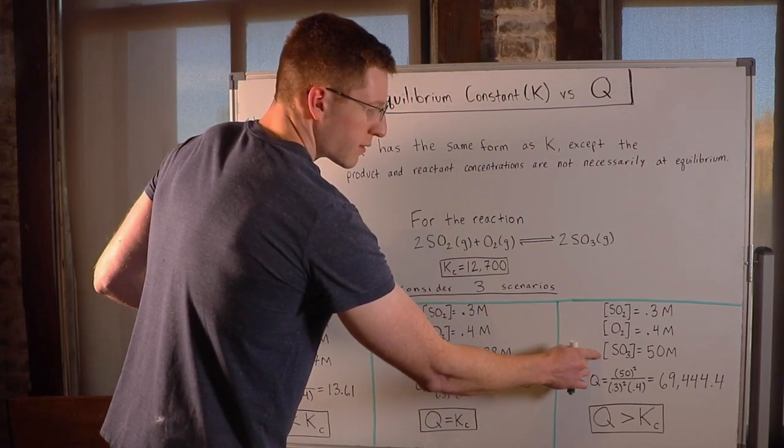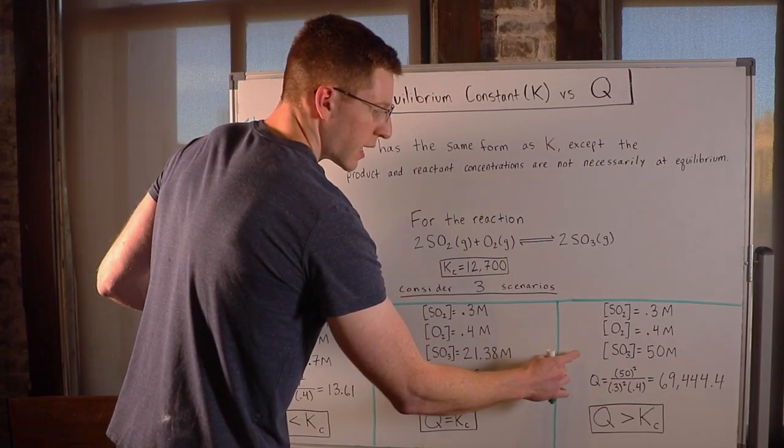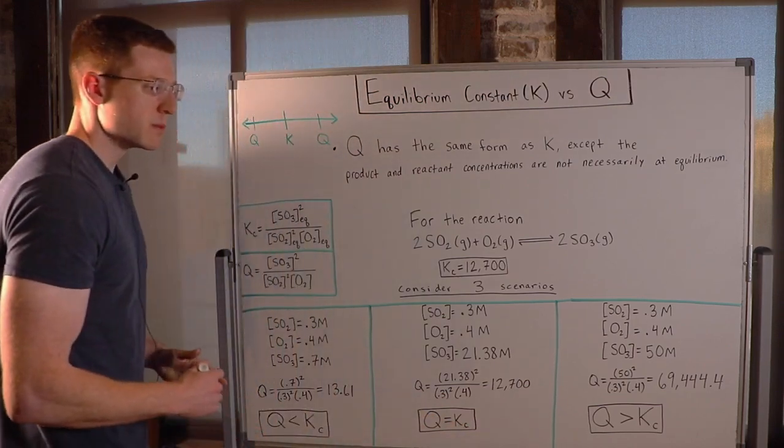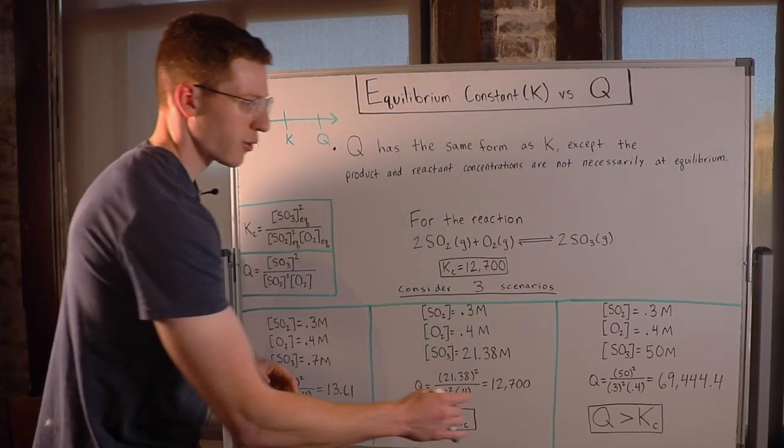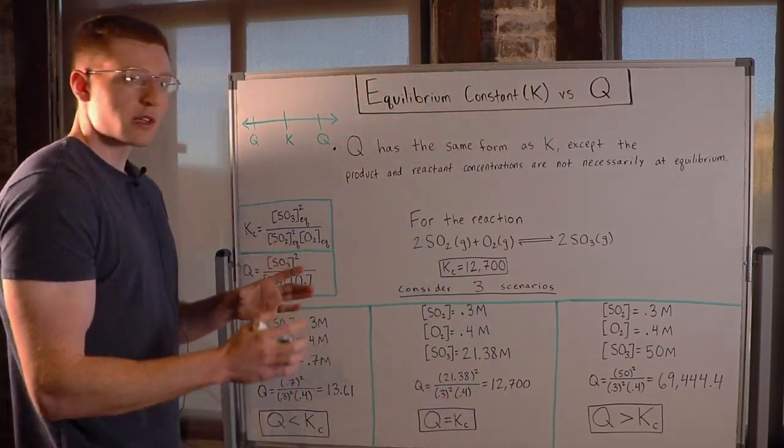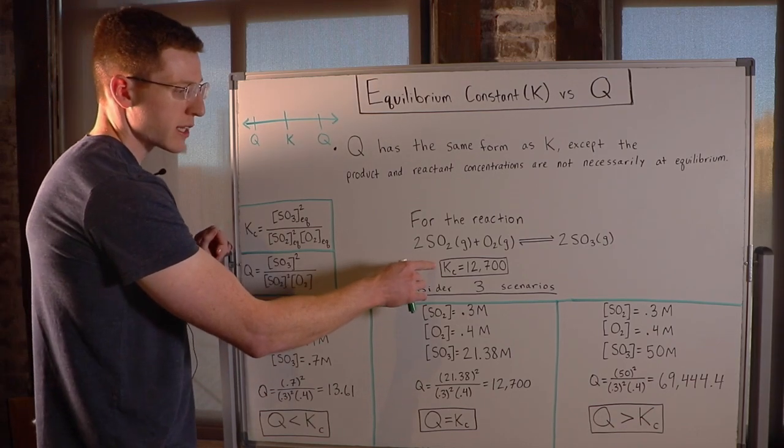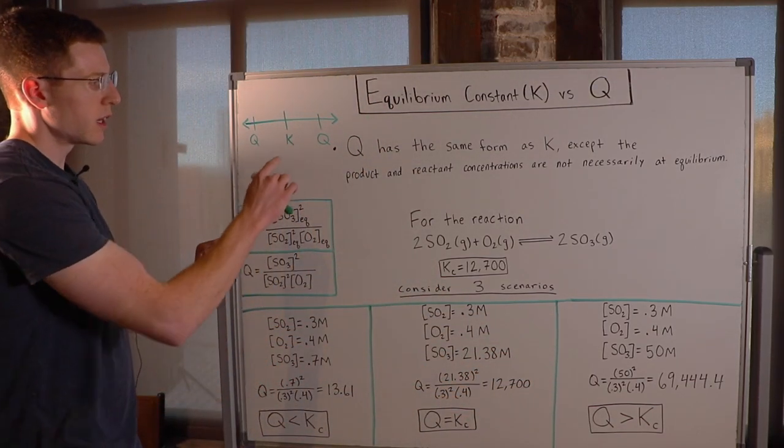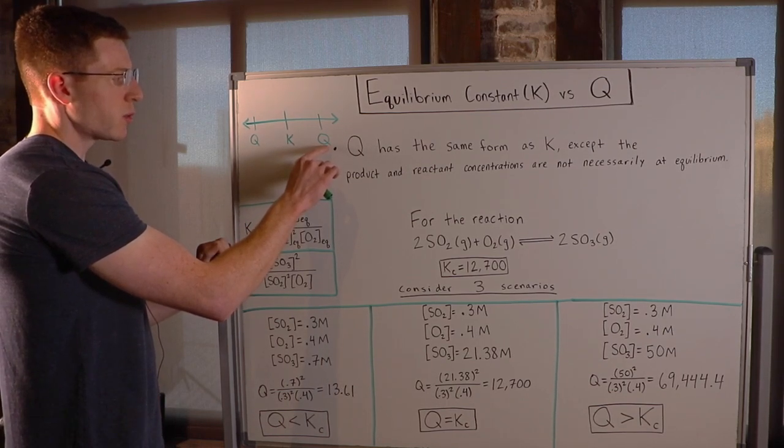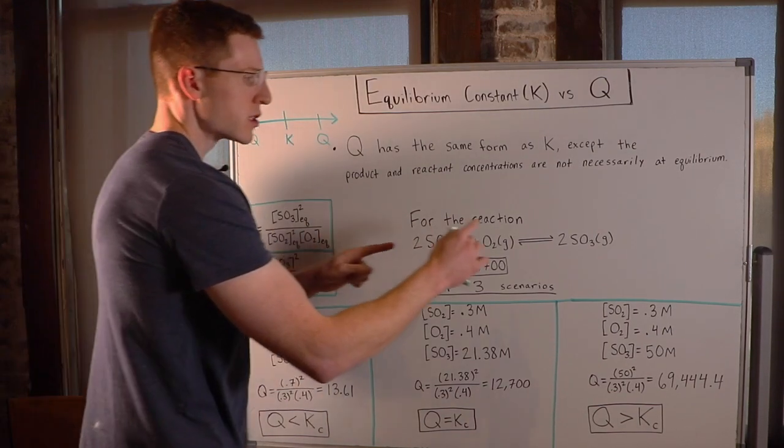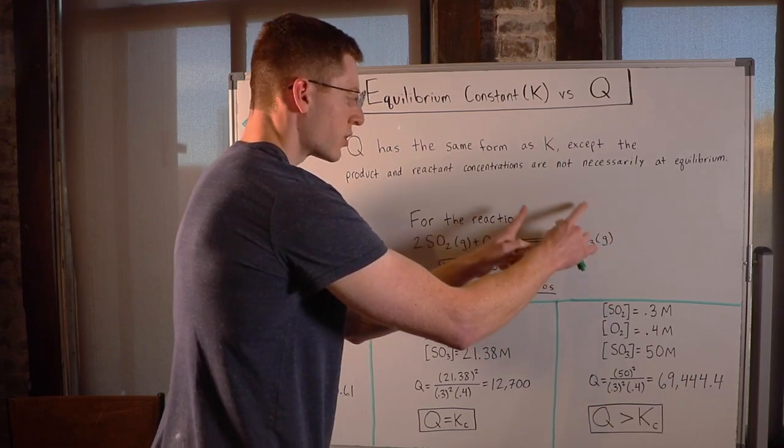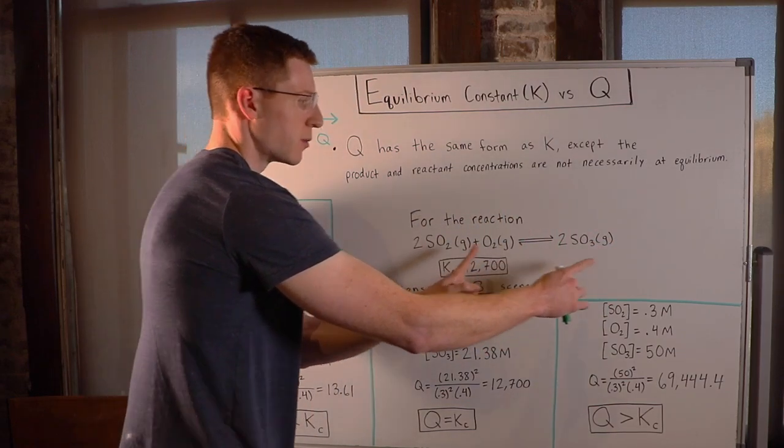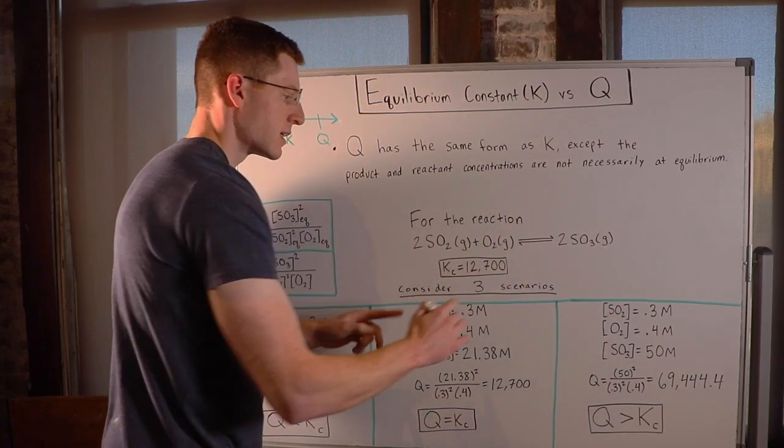In this third scenario, we have some initial concentrations, and we calculated Q, and we found it to be 69,444.4. That's a lot bigger than 12,700. So in this case, Q is greater than Kc. On a number line, we're all the way over here now. And in this case, Q wants to get back to Kc. So we're going to take products and turn them back into reactants so that we can shift back to get to K.